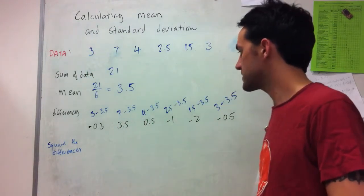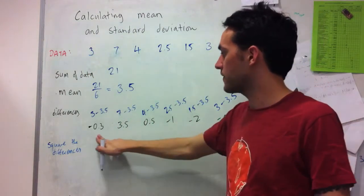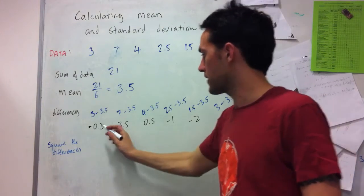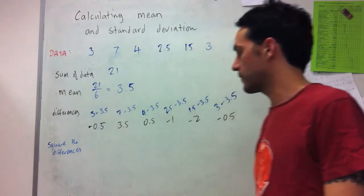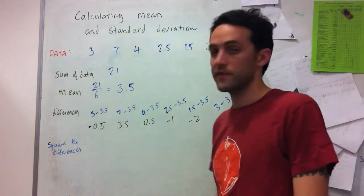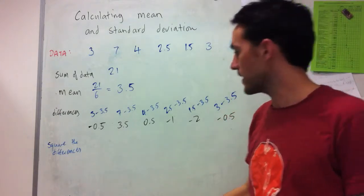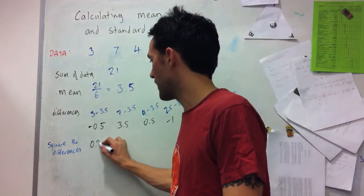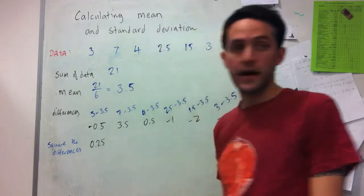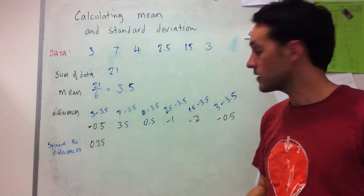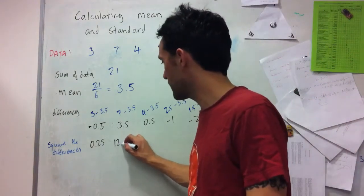So we take all of these differences squared. So I'm going to have 0.5 squared, or negative 0.5 squared, which gives me 0.25. I'm going to have 3.5 squared, which gives me 12.25.